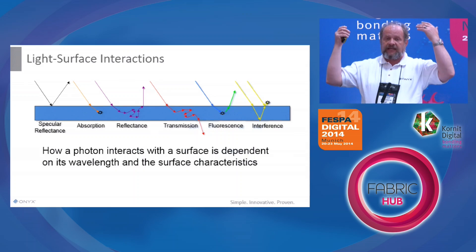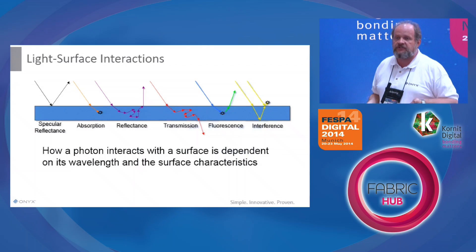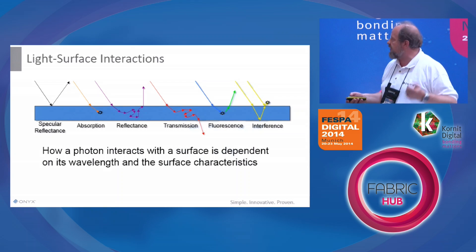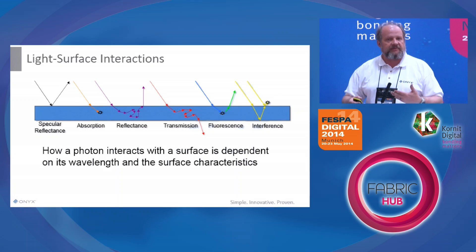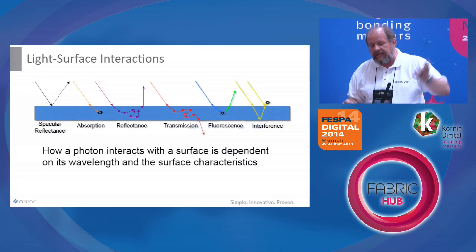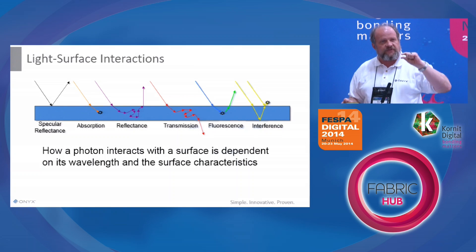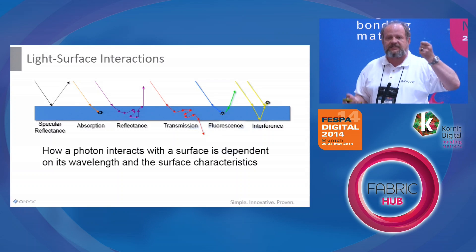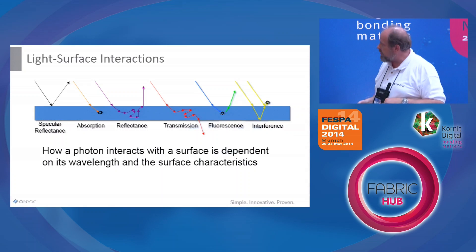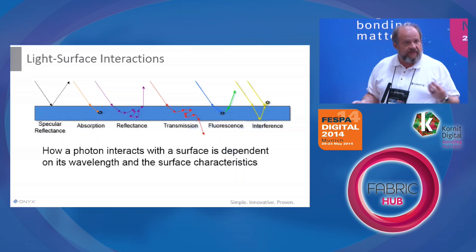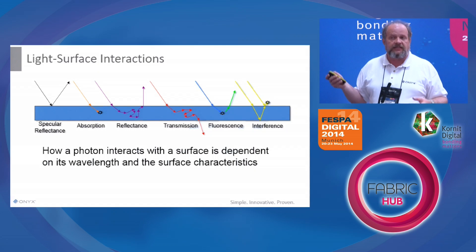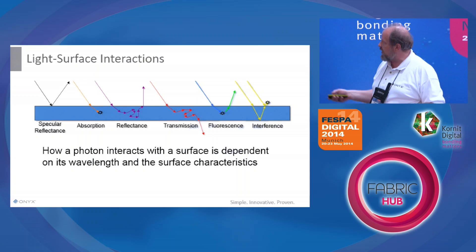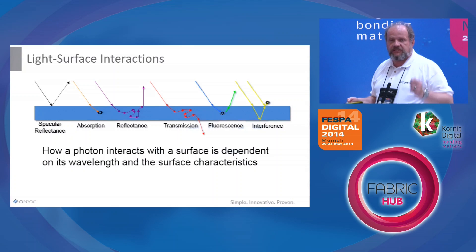Fluorescent light bulbs basically use that — they use high energy and the phosphors re-emit the light in the visible range. With fluorescence, we have a change in the wavelength of light. The last thing is interference — like interference pigments, for example metallic inks. Light goes into the surface and bounces out, and the thickness of the surface is such that the light coming out either interferes constructively or destructively. The color you see on a compact disc is actually a result of interference — it's not necessarily a pigment. How a photon interacts is dependent upon the wavelength of light. Light that gets absorbed you don't see; light that gets reflected you do see. So cyan absorbs red light. Spectral reflectance and interference are both aspects where the direction is an important factor.